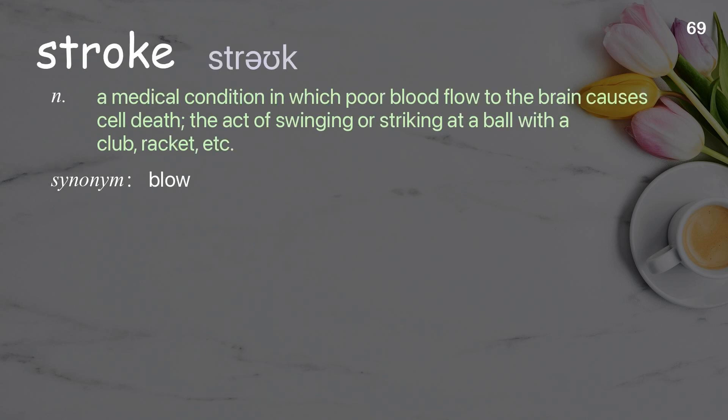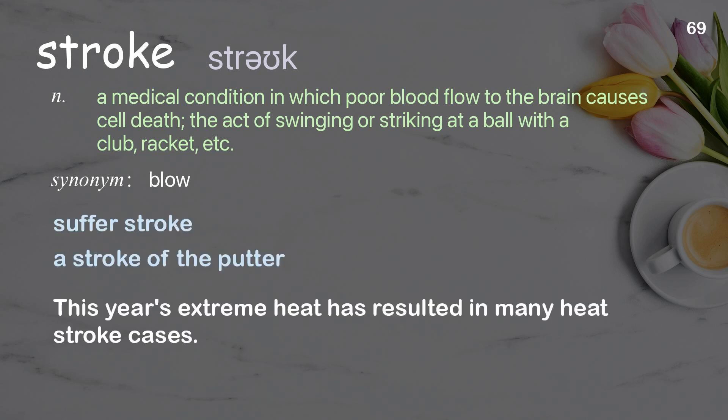Stroke: A medical condition in which poor blood flow to the brain causes cell death; also the act of swinging or striking at a ball with a club, racket, etc. Examples: Suffer a stroke. A stroke of the putter. This year's extreme heat has resulted in many heat stroke cases.